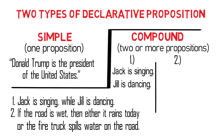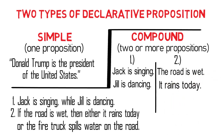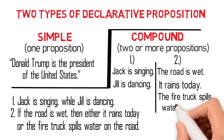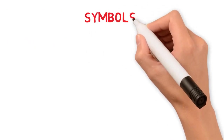The second example, on the other hand, is composed of three propositions, namely 'The road is wet,' 'It rains today,' and 'The fire truck spills water on the road.' So that's about propositions. Now let's proceed to the symbols used in symbolic logic.